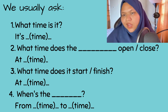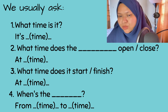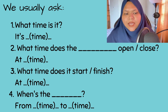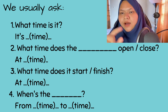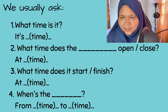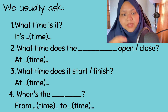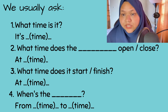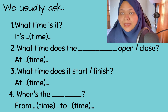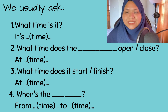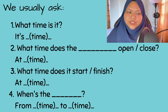Question number three: you ask this when you want to know when something is going to start or finish. For example, 'What time does this movie start?' You answer with 'At...' and then state the time. The last question is a little different — it's when you want to talk about a range of time.